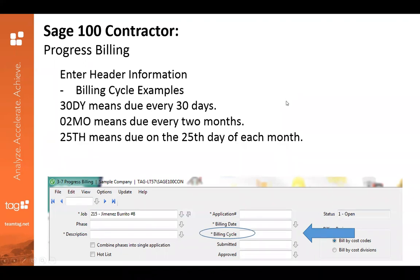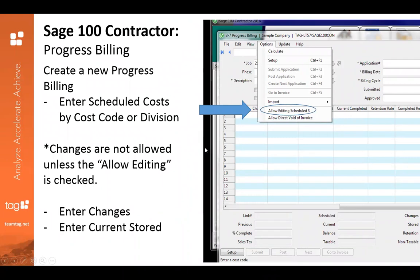I did send out the presentation PowerPoint printout to all of our registrants. If you did not receive that, feel free to email me and I'll send that over to you. There are some options when you're creating your progress billing — heading up to the toolbar menu at the top, you'll hit Options and you'll have two options: Allow editing scheduled dollar amount and Allow direct void of invoice. Make sure it's all set up correctly, as changes won't be allowed unless you have that checked off.